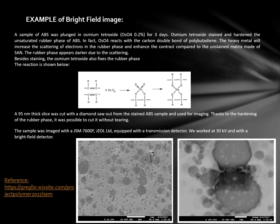Here is an example of bright field imaging. A sample of ABS was plunged in an osmium tetroxide solution for 3 days, and the osmium tetroxide stained and hardened the unsaturated rubber phase of the ABS. Osmium tetroxide reacts with the double carbon bond of the beta-diene part of the polymer; the heavy metal increases the scattering of electrons in the rubber phase and enhances the contrast compared to the unstained styrene acrylonitrile matrix. The rubber phase appears darker due to the scattering, and the osmium tetroxide also fixes the rubber phase. A 95 nm thick slice was cut with a diamond knife from the stained ABS sample and imaged at 30 kV with a bright field detector.